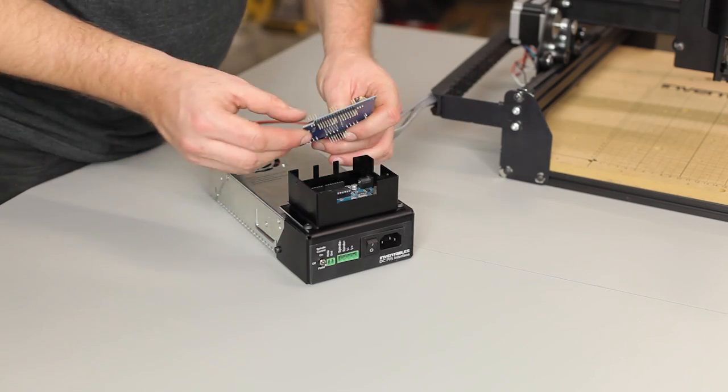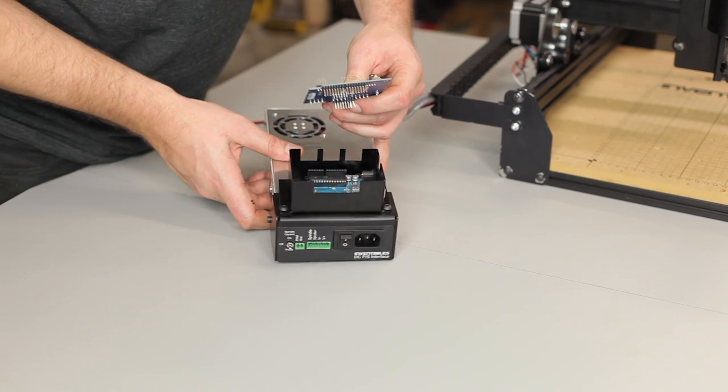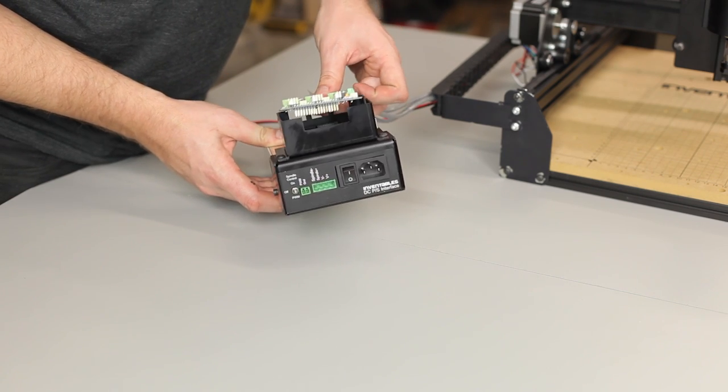Now we're going to put the G-Shield onto the Arduino. There are pins on the bottom of the G-Shield that line up to the socket on the Arduino.